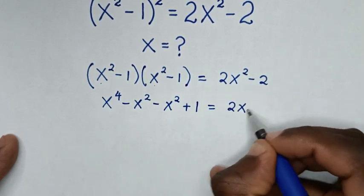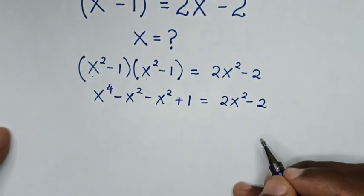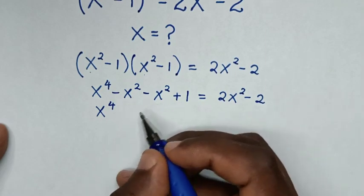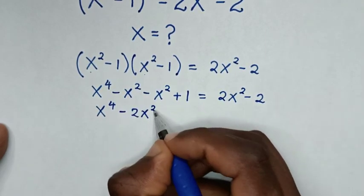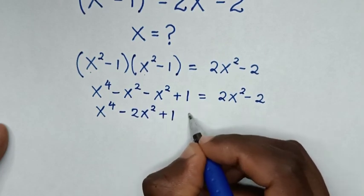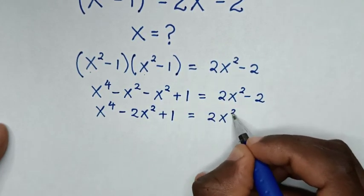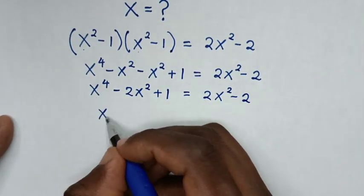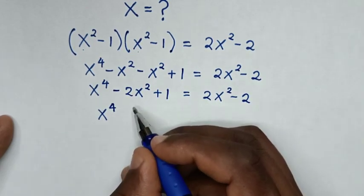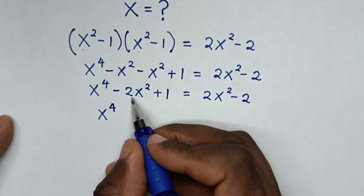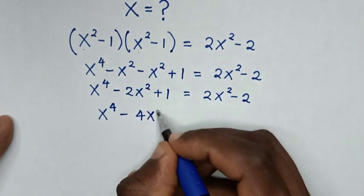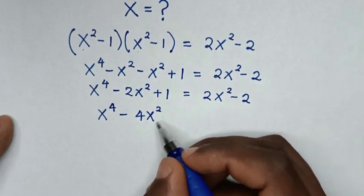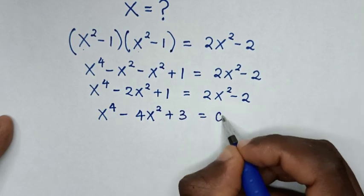So the left side becomes x⁴ - 2x² + 1 = 2x² - 2. Rearranging by moving all terms to one side: x⁴ - 4x² + 3 = 0.